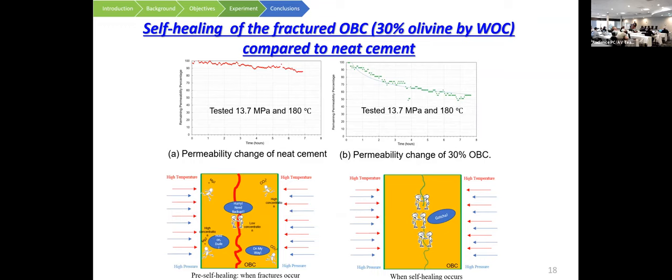The self-healing results show greater permeability reduction in the 30% OBC compared to neat cement. What's happening is that CO2, used as the penetrating fluid, reacts with the olivine particles inside the cement matrix at high temperature and high pressure, generating magnesium carbonates that seal the fracture and reduce the aperture. That's why the 30% OBC shows larger permeability reduction.